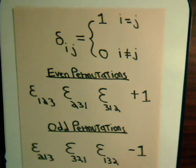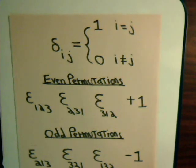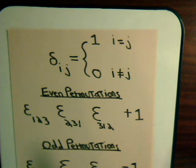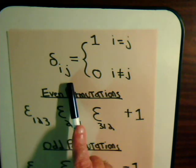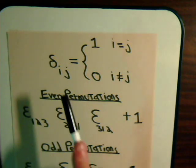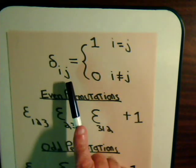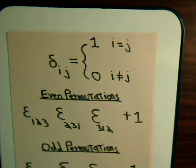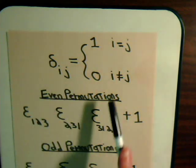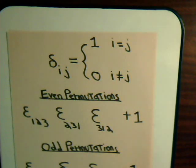Back in video number one, we talked a little bit about the Kronecker delta symbol. It's a simple setup, really — this is either going to be zero or one. If these are identical numbers, it equals one. If these numbers do not match, then it's zero.